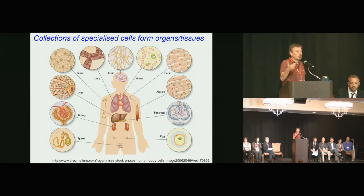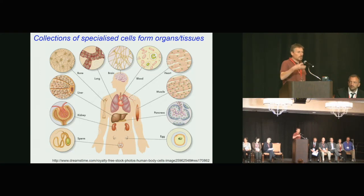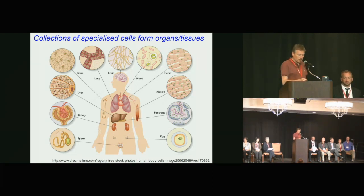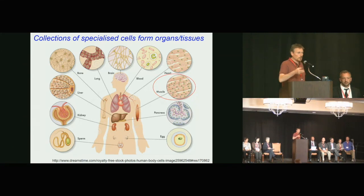You have lots of different tissues in your body — liver, brain, muscle. The genes expressed in a particular tissue make a set of proteins, and those proteins give cells their characteristics. Muscle has lots of muscle cells expressing muscle genes that give them their function.